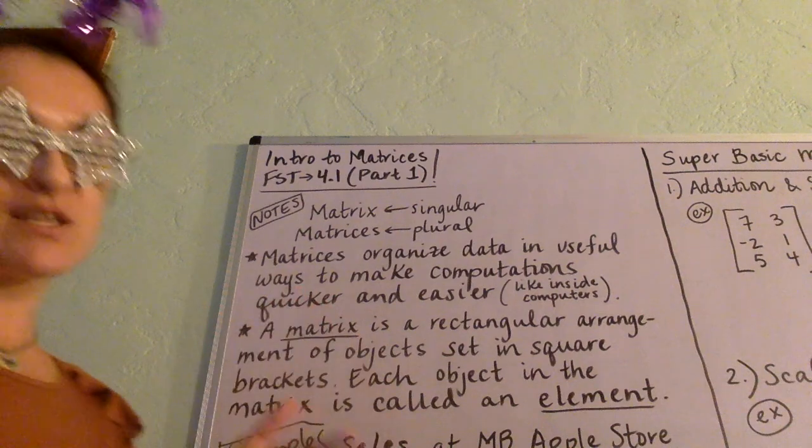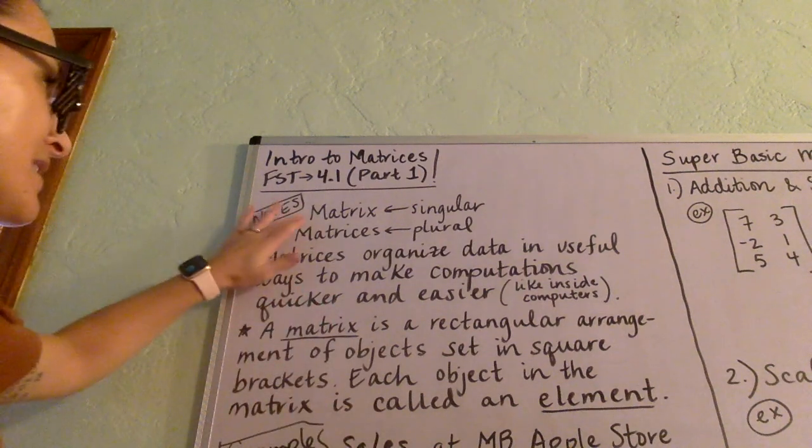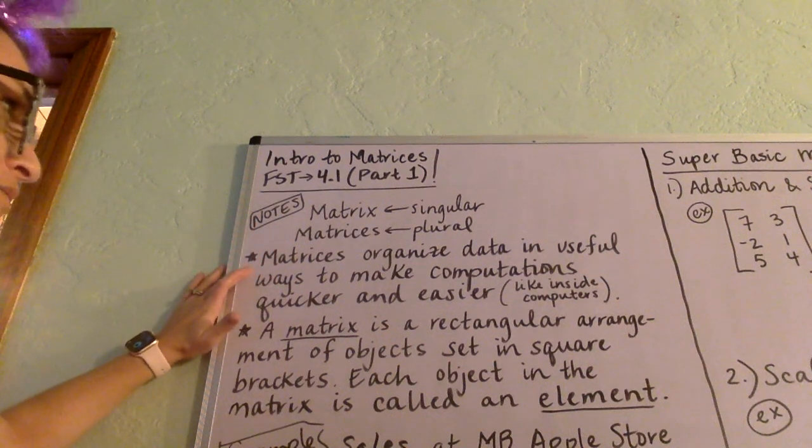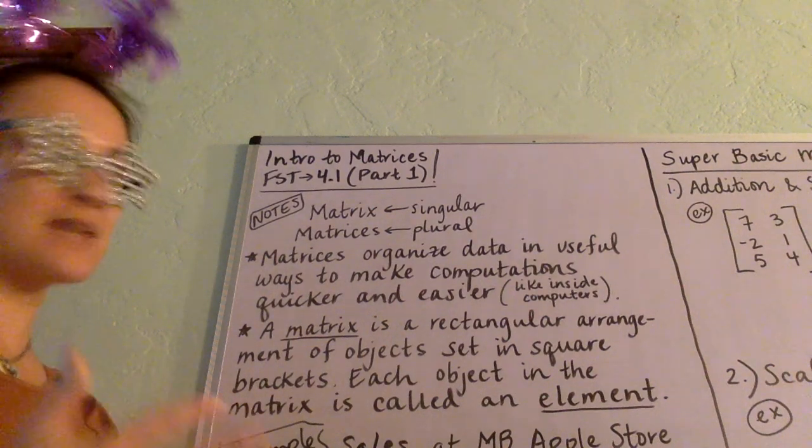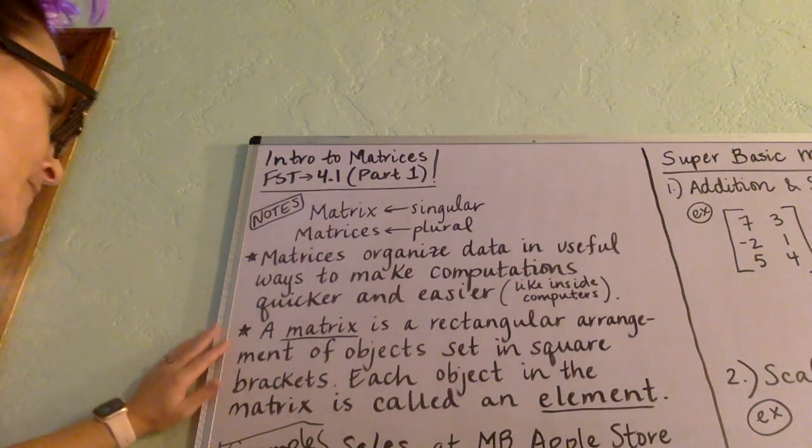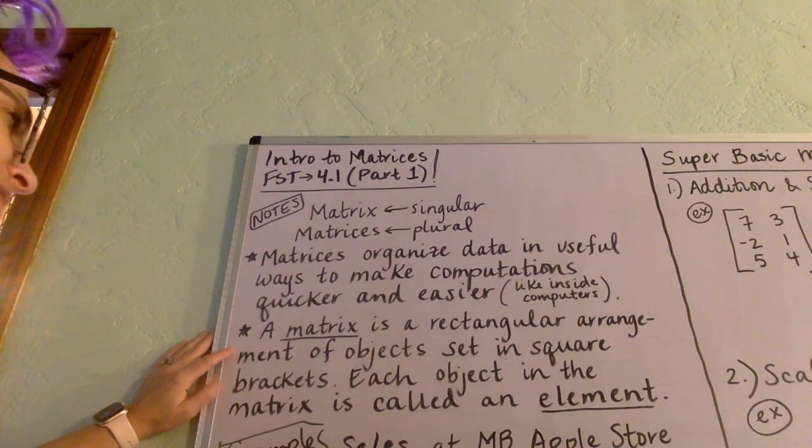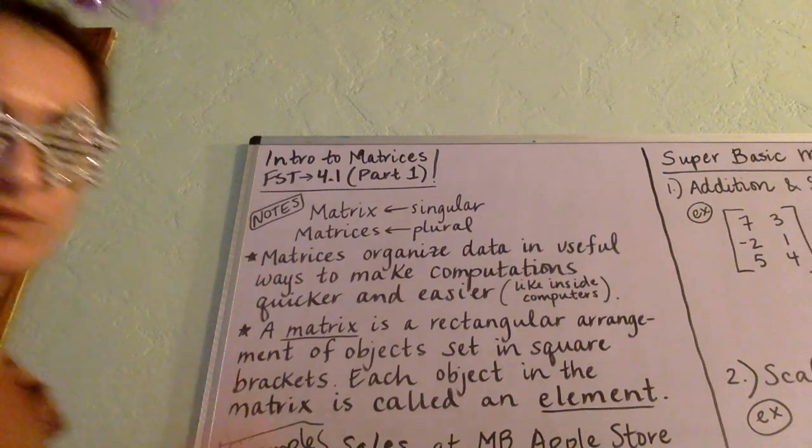We're talking about a matrix, using matrix, matrices. Matrix is the singular, matrices is the plural, and matrices organize data in useful ways to make computations quicker and easier. They are embedded in computers. A matrix is a rectangular arrangement of objects set in a square bracket. Each object in the matrix is called an element.